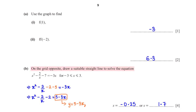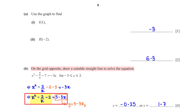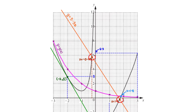On the grid, draw a suitable straight line to solve x² minus 2 over x minus 7 equals minus 3x, for x between negative 3 and 3. Rearranging to leave the curve's function on one side: minus 7 is rewritten as minus 2 minus 5, and moving minus 5 gives y = 5 minus 3x. Drawing this line and marking its intersections with the curve gives x = negative 0.25 and x = 1.7.